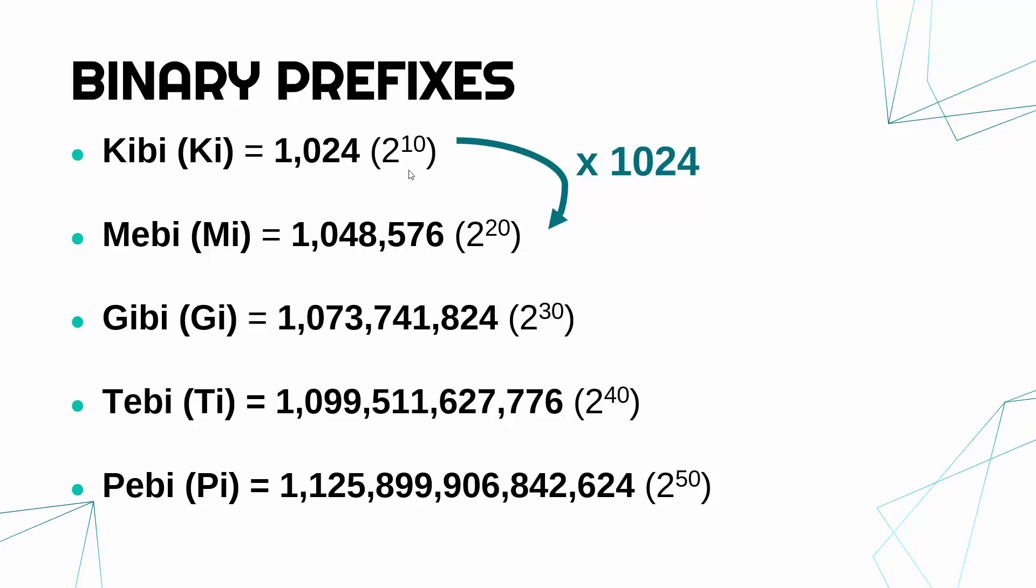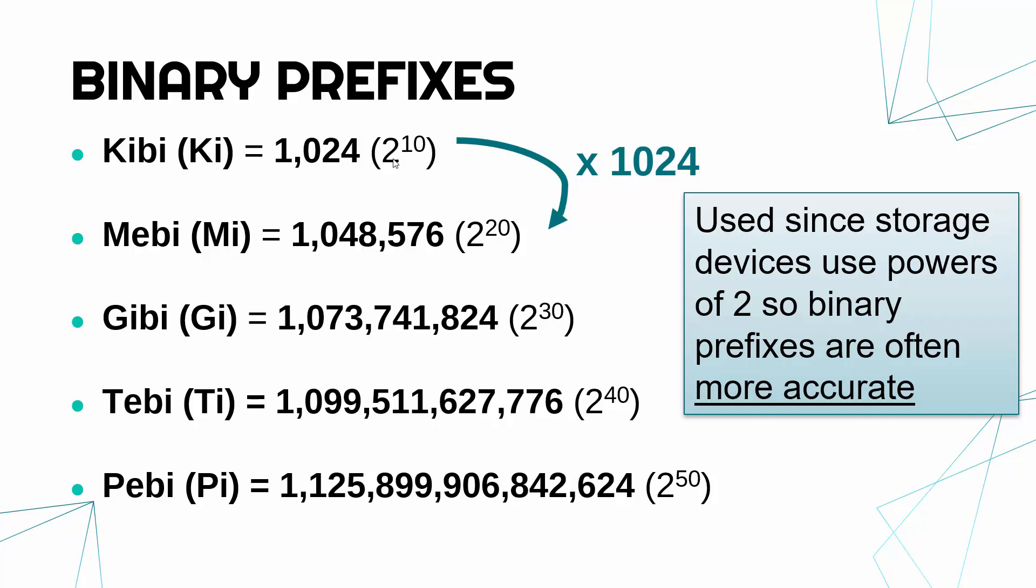But in terms of powers, it's adding a power of 10 each time. But crucially, we've got two now instead of 10. And so these fit much better with binary because in storage devices, storage devices are not storing stuff in decimal. They're storing stuff in binary—powers of two.